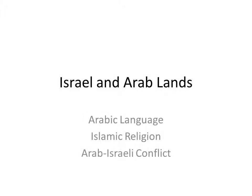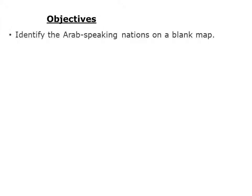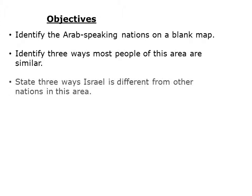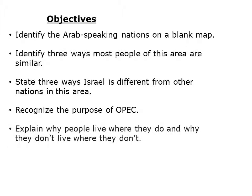This lesson covers Israel and Arab lands, the Arabic language, Islamic religion, and the Arab-Israeli conflict. Your objectives are to identify the Arabic-speaking nations on a blank map, to identify three ways most nations in this area are similar, to state three ways that Israel is different from other nations in this area, to recognize the purpose of OPEC, and to explain why people live where they do and why they don't live where they don't.